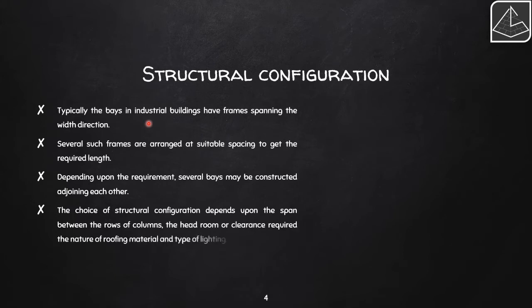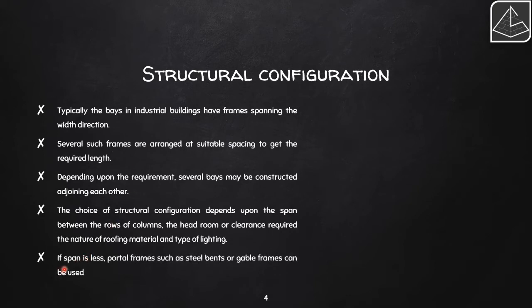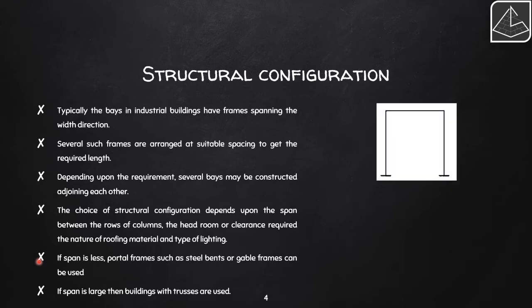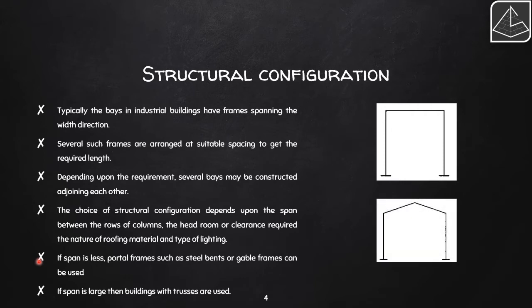The choice of structural configuration depends on the span between column rows, the headroom required, the nature of roofing material, and the type of lighting. If the span is small, portal frames like steel bends or gable frames can be used; if the span is large, buildings with trusses are used. The steel bend has columns and a beam, while the gable frame has columns supporting inclined beams connected at the top. As span increases, a truss arrangement on the roof is required.